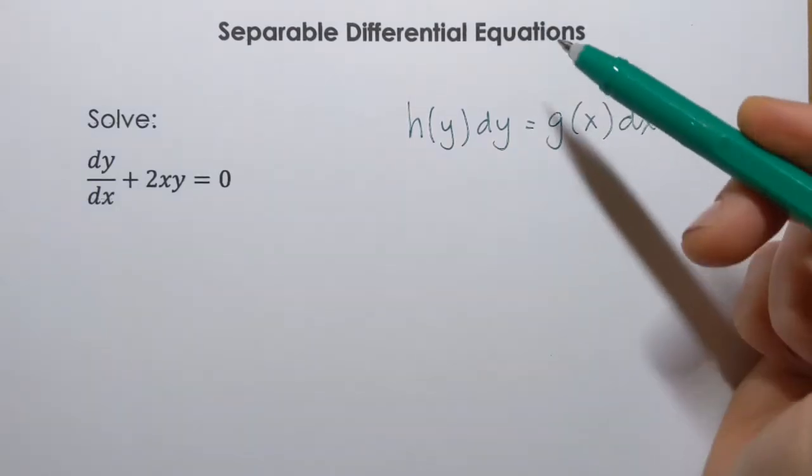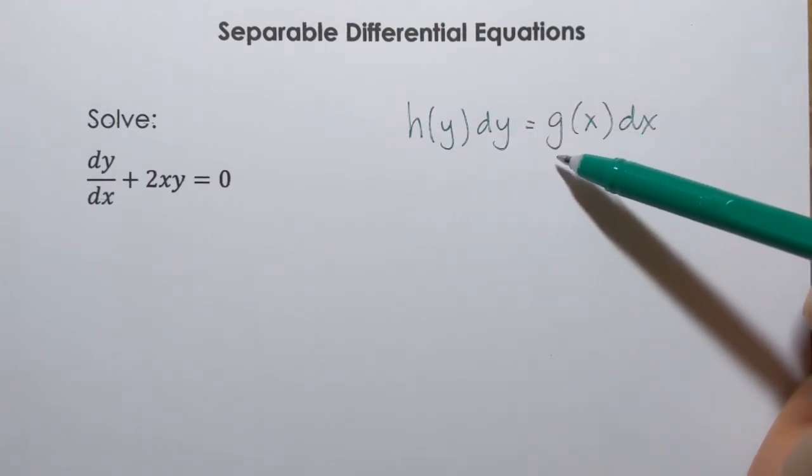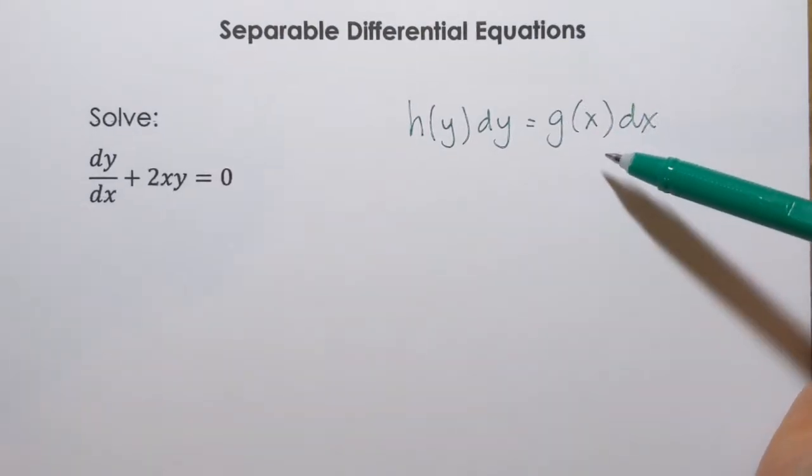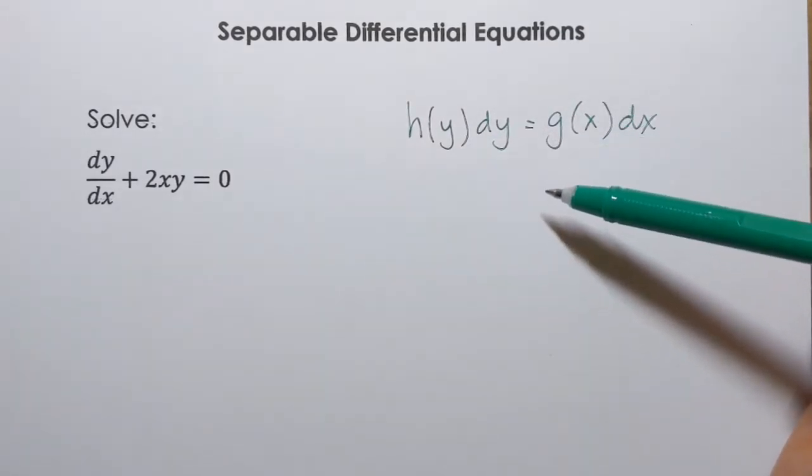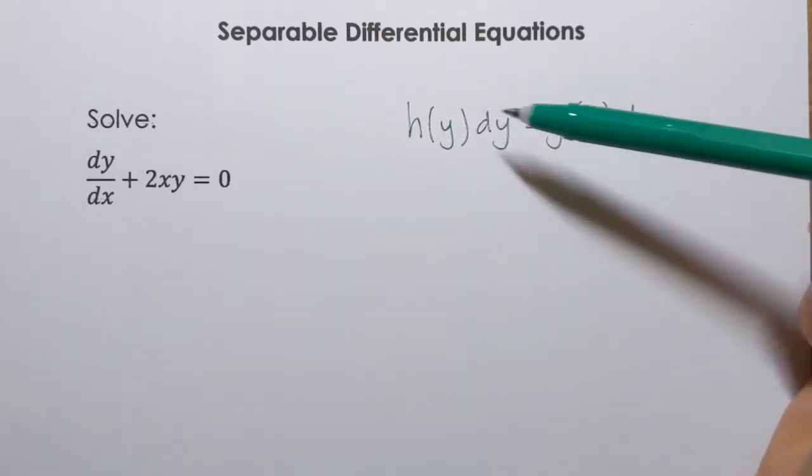As you can see, here everything that involves y is on the left side, including differential dy, and everything that involves x is on the right-hand side, including differential dx. And if we are able to write equation in this form, first of all, then we know that it's a separable differential equation, and second, we solve that equation by integrating both sides.